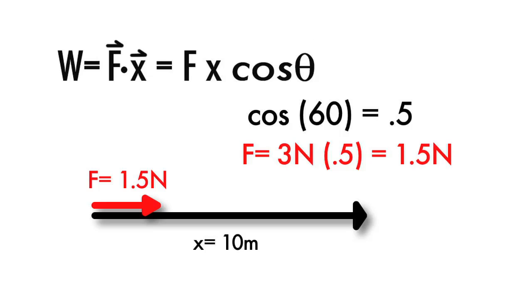is 3 newtons times cosine 60, or a parallel vector of 1.5 newtons, and 1.5 times 10 gives us 15 joules of work.